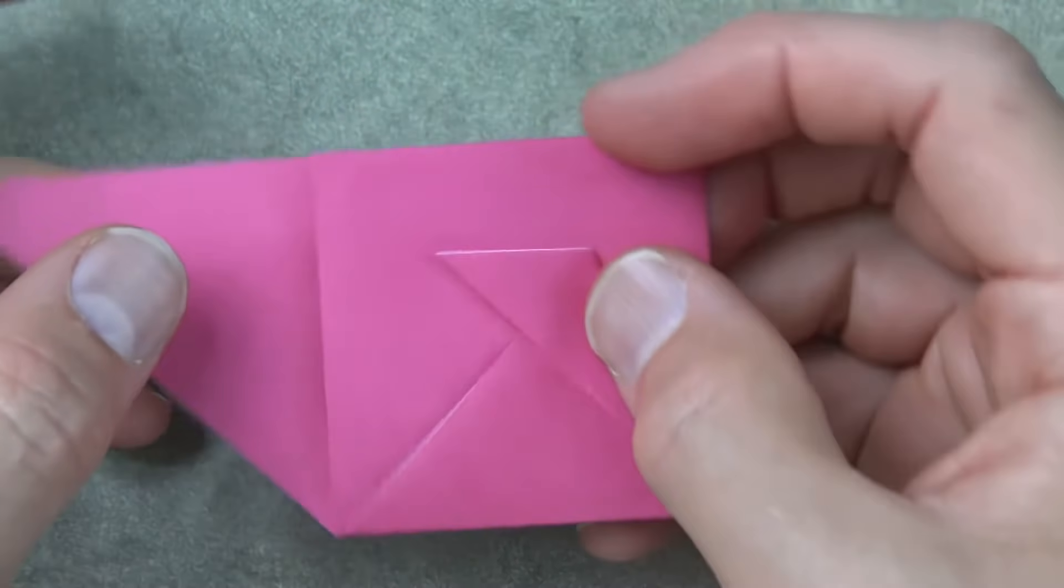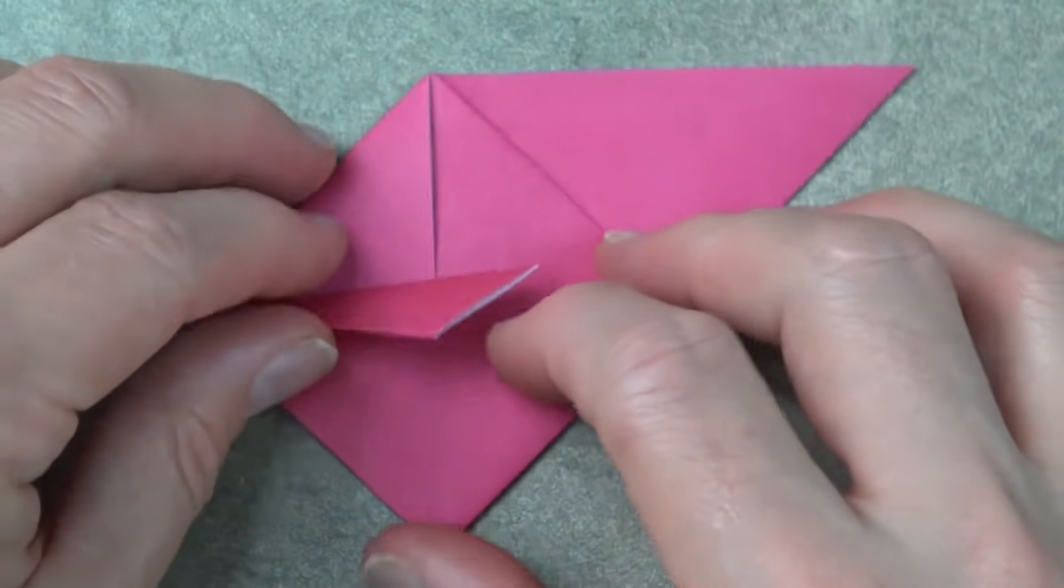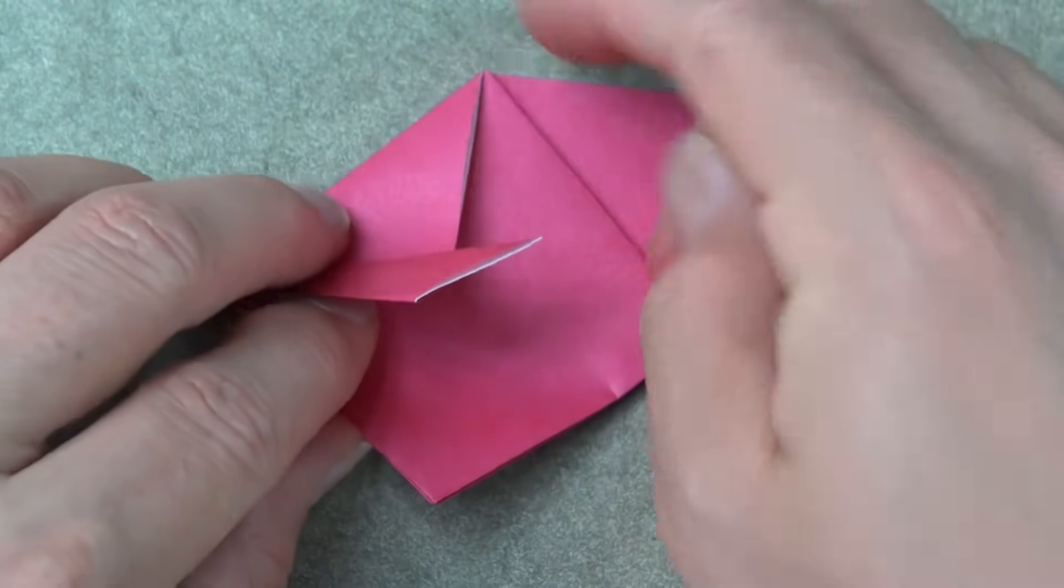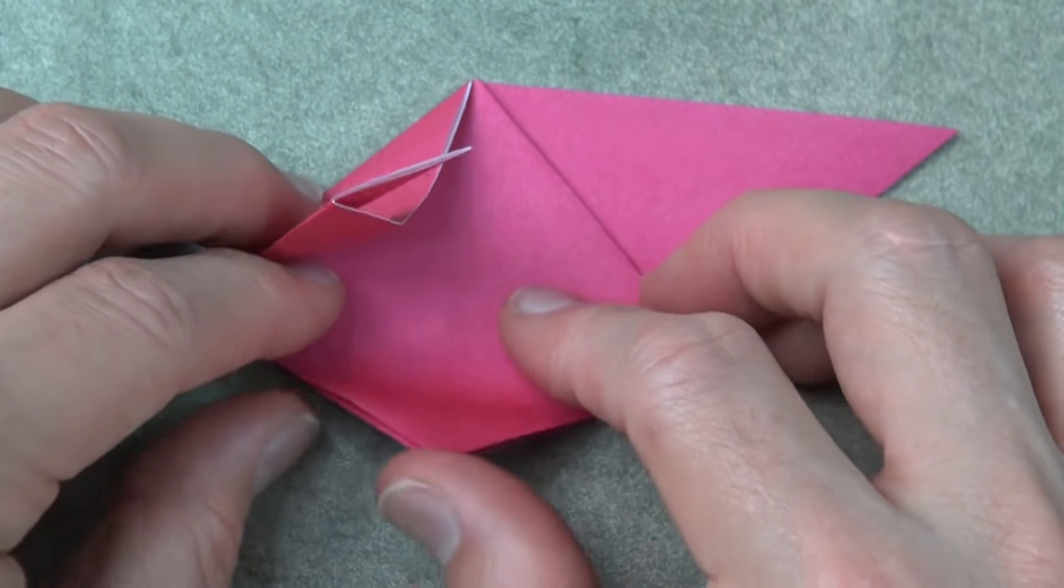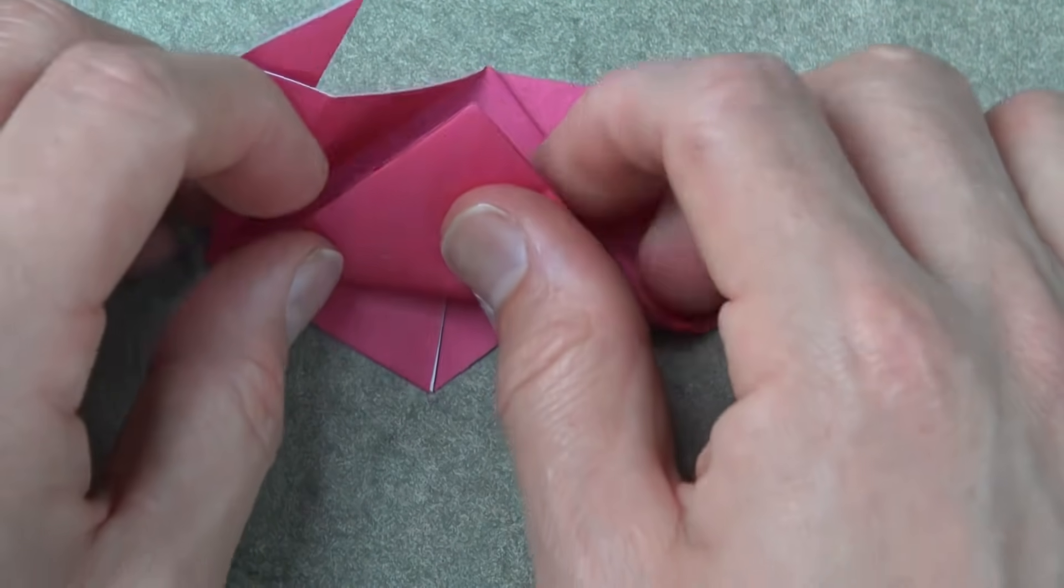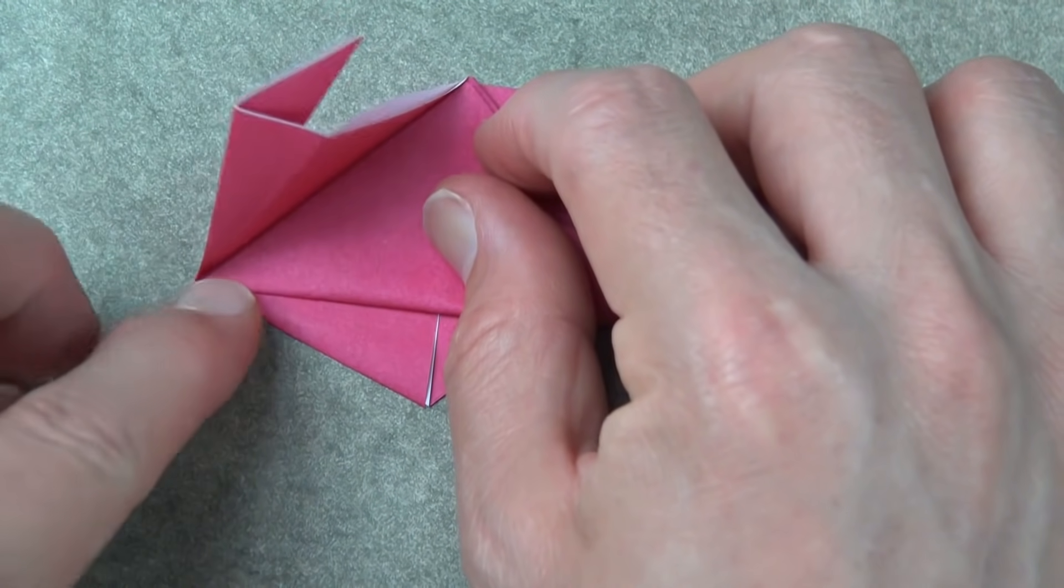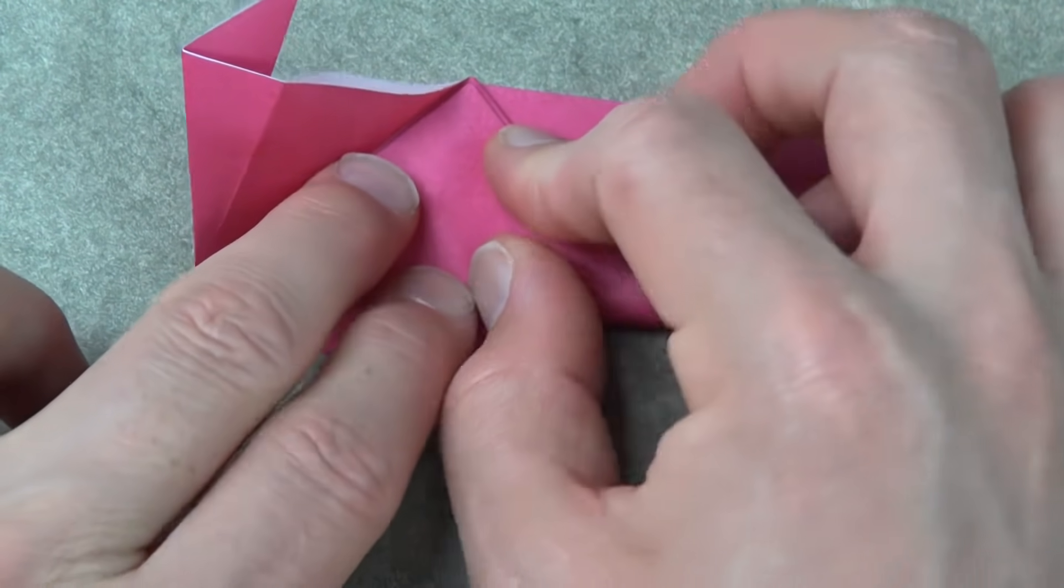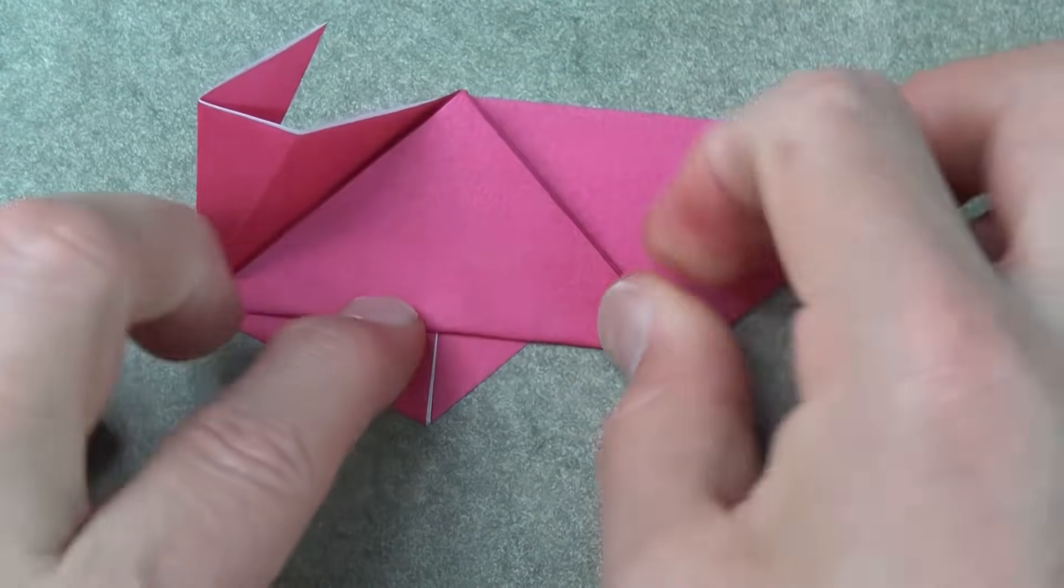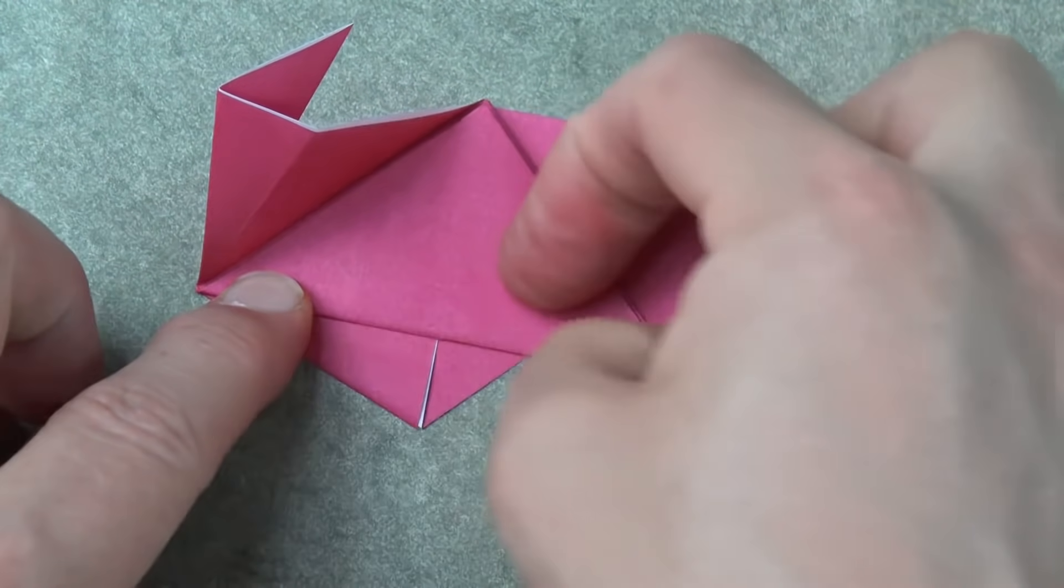Now rotate and fold this flap to this point, but we're going to go underneath this flap. So it just goes up like this and crease sharply.